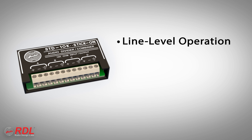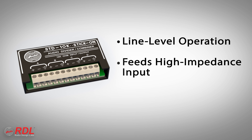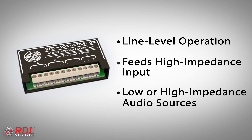The STD-10K operates with line-level audio signals that feed high impedance — that is 10K ohm or greater — audio inputs. The module may be fed from low impedance or high impedance sources.